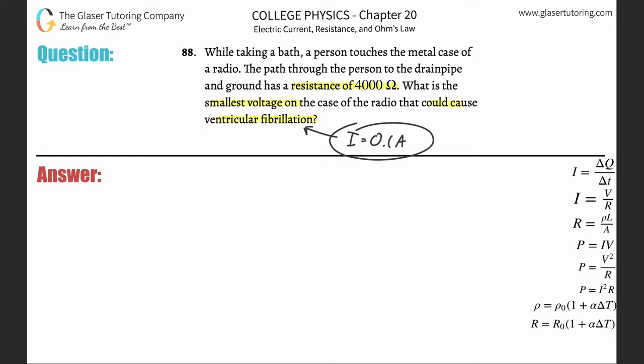So basically what we now realize is that if we know current that I just wrote down and we know the resistance, we can find voltage through Ohm's law.